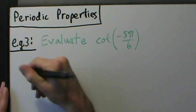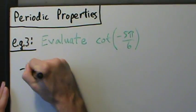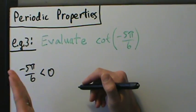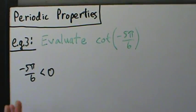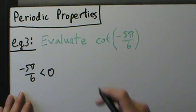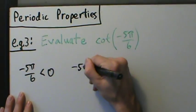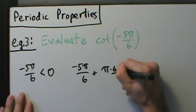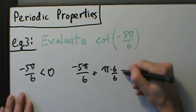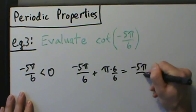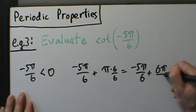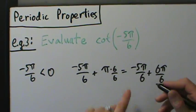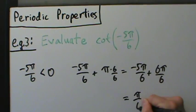Negative 5π over 6 is less than 0, so we want to add π as often as needed until we get an angle between 0 and π. So we compute negative 5π over 6 plus π. Multiplying π by 6 over 6 gives us negative 5π over 6 plus 6π over 6, which equals π over 6.